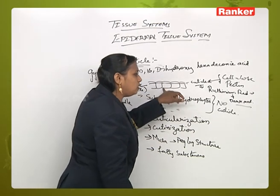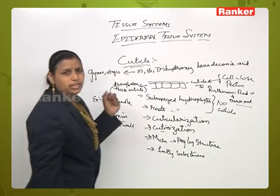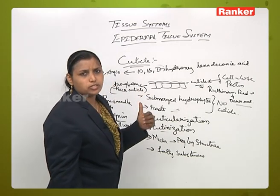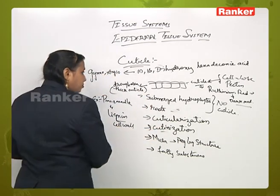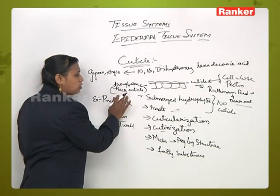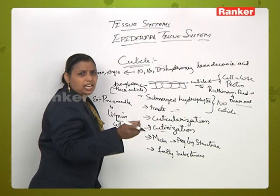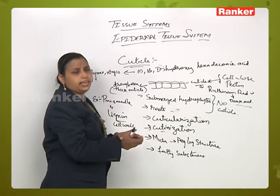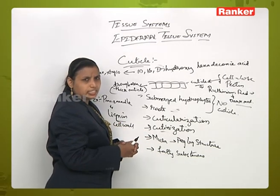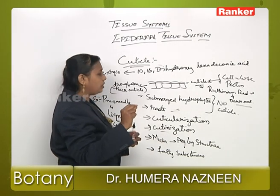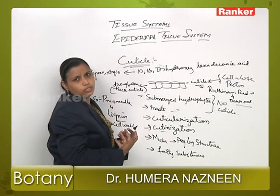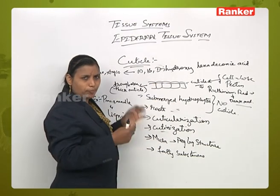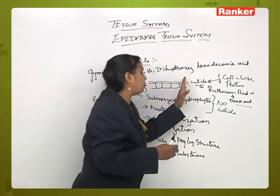The thickness of cuticle helps in the prevention of transpiration in drought area plants. In mesophytes, on the other hand, the cuticle remains as a normal single layer above the epidermis. So in drought area plants the cuticle layer is much thicker to prevent transpiration, whereas in mesophytes the cuticle is very thin, occurring as a simple single layer.